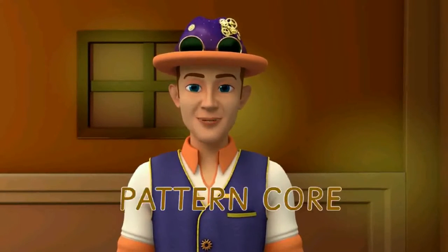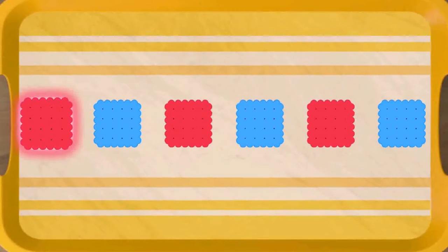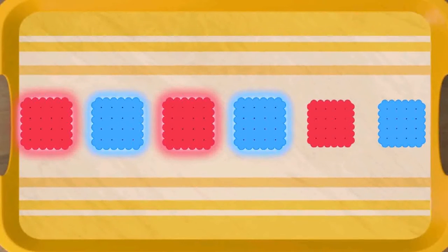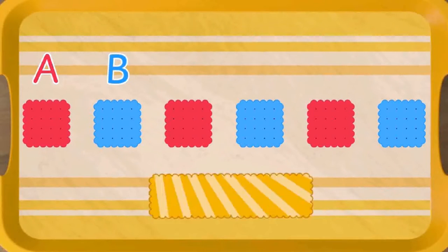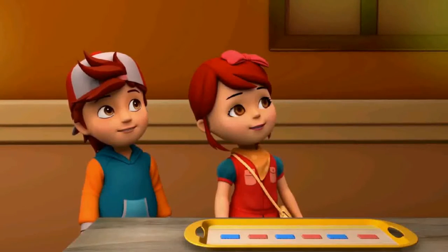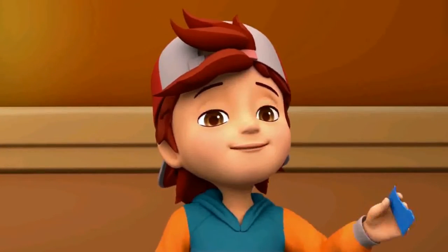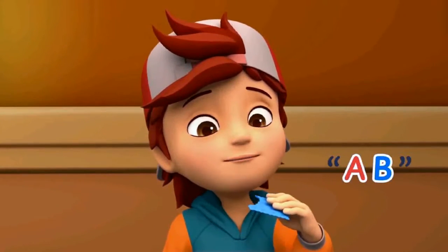This is known as the pattern core. It follows: one thing, other thing — one thing, other thing. To make it simple, let's call one thing A and the other thing B. This makes the pattern core an A-B core. That's genius — an A-B core! I like it very much. Short and sweet.